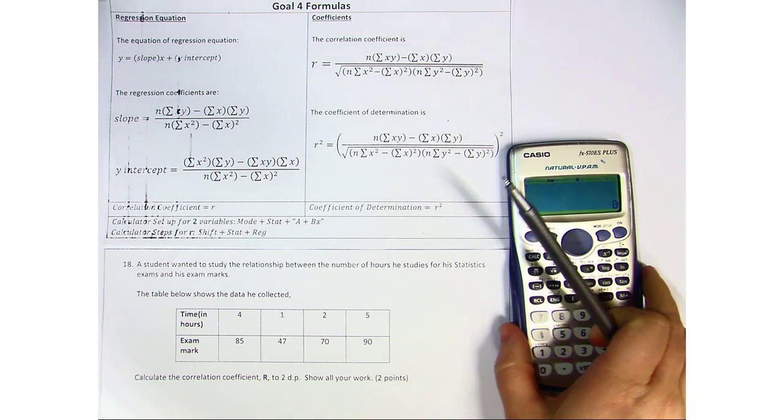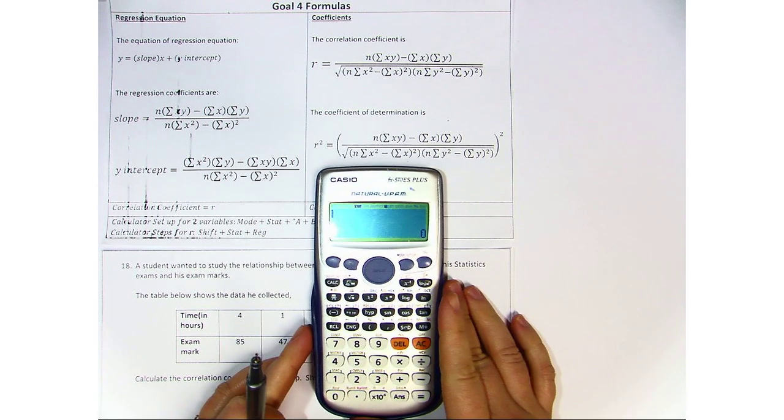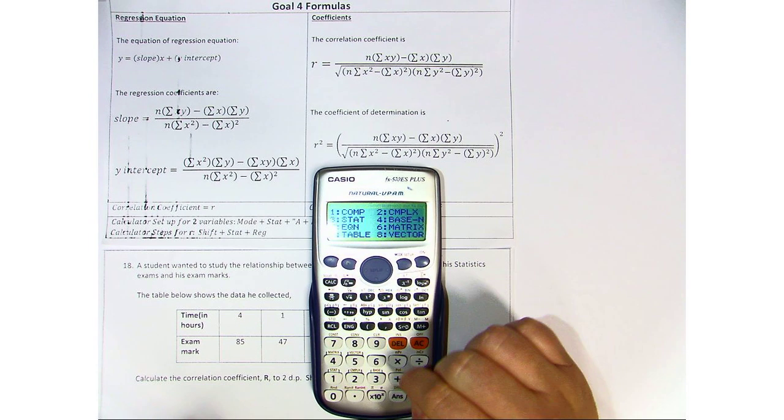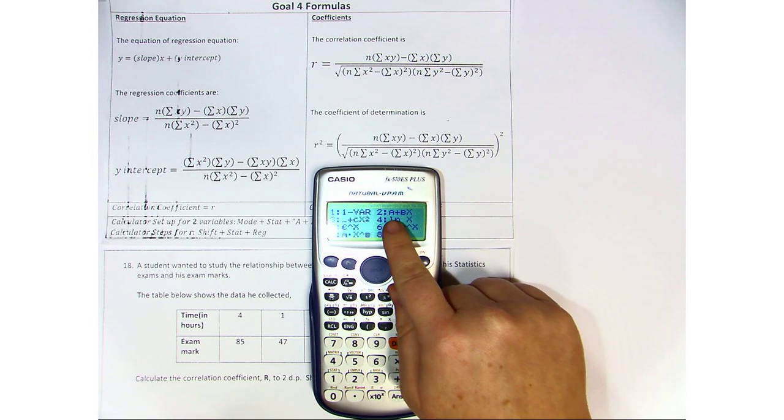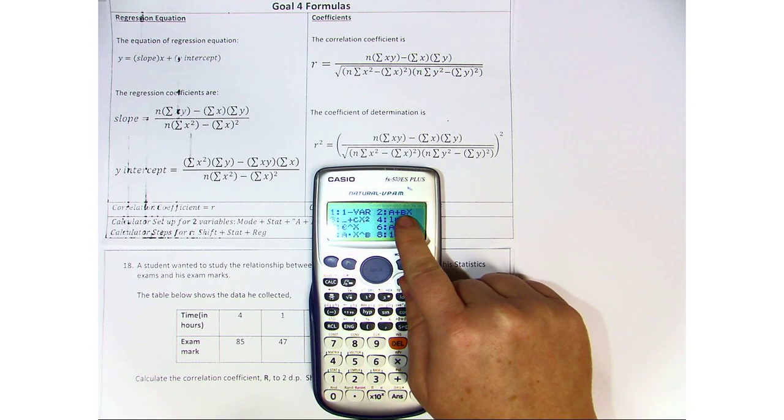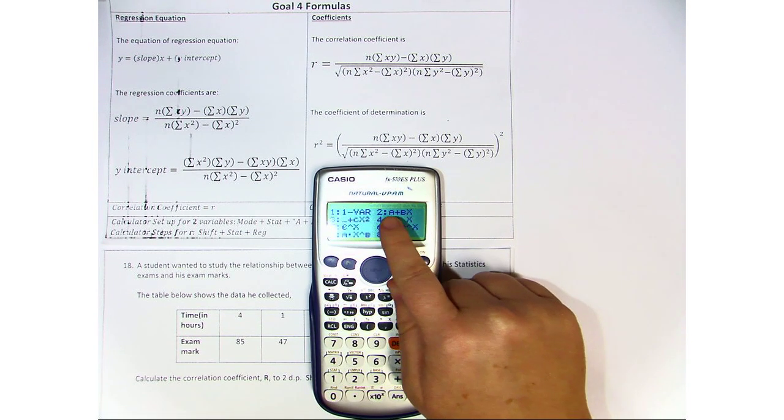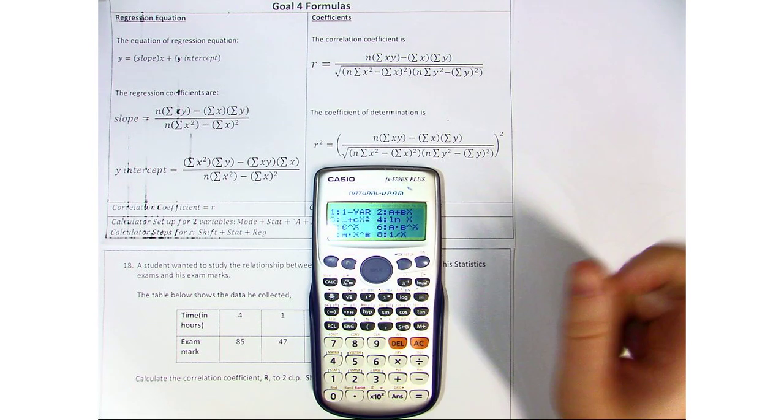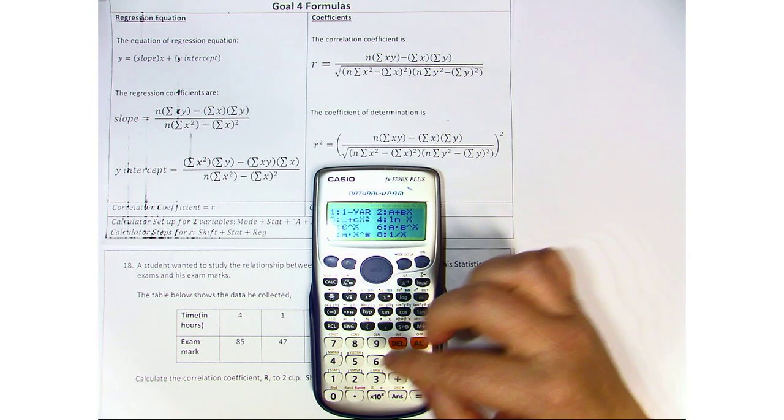Now in the calculator, you'll be able to very quickly see this when you hit stat. Because when you hit stat, you see where it says a plus bx. In this case, b is considered the slope because it is attached to the x, and the a is alone indicating that it is in fact the intercept.